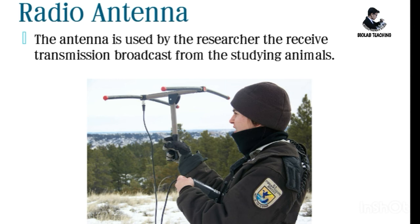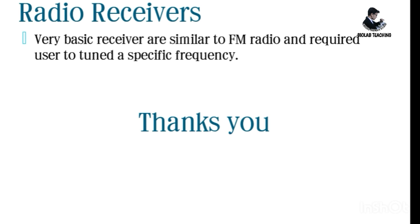The radio receivers are very basic and similar to an FM radio. They require the user to tune to a specific frequency. Modern receivers also have a scanning capability and an output for computers for automatic data recording. These are the main components of the radio telemetric system.